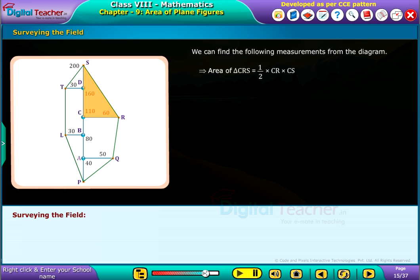Area of triangle CRS equals half into CR into CS equals half into 60 into 90 which equals 2700 square meters. Area of triangle STD equals half into TD into DS equals half into 30 into 40 which equals 600 square meters. Area of rectangle BLTD equals BL into BD.